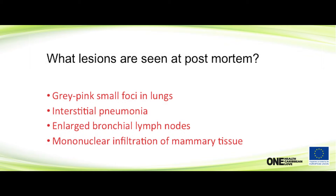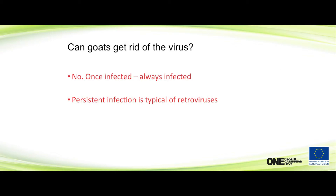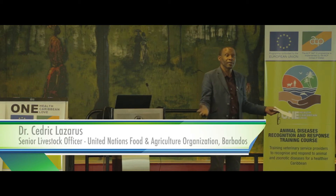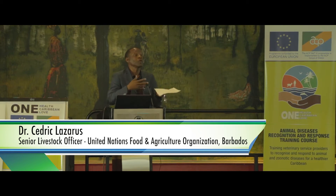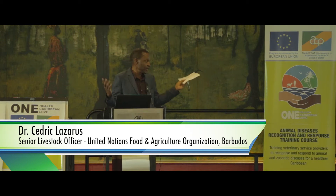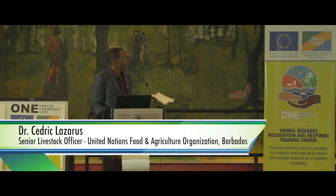I've never seen many of these lesions in animals I did post-mortems on — I didn't see anything. We had to put them down because they were losing weight and showing emaciation, and we saw enlarged joints. Can a goat get rid of the virus? Can a human get rid of HIV? Can a cow get rid of bovine leukosis? No. Once you have it, you have it for life. It's typical of all retroviruses — you got it, you always have it. It's persistent.